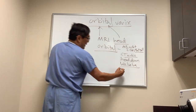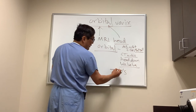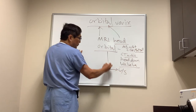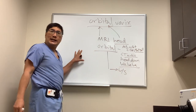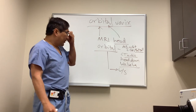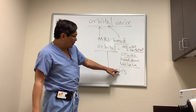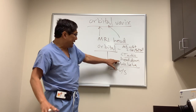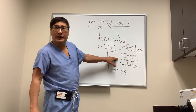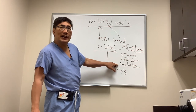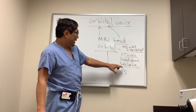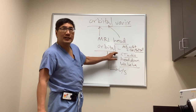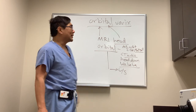If those are either not available or not helpful, we can do orbital ultrasound. Orbital ultrasound has the advantage of being a dynamic study, which we can do in the head-down position as well as with the Valsalva. Ultrasound is sometimes better for occult orbital lesions.